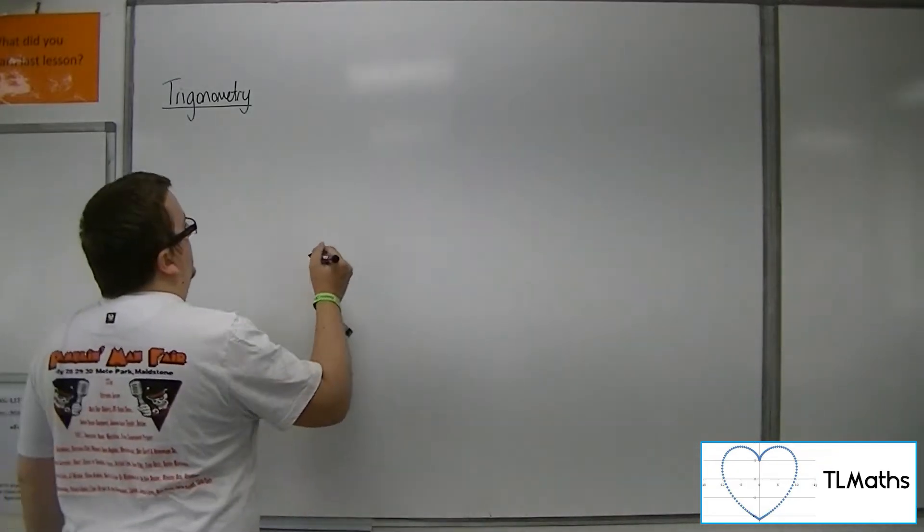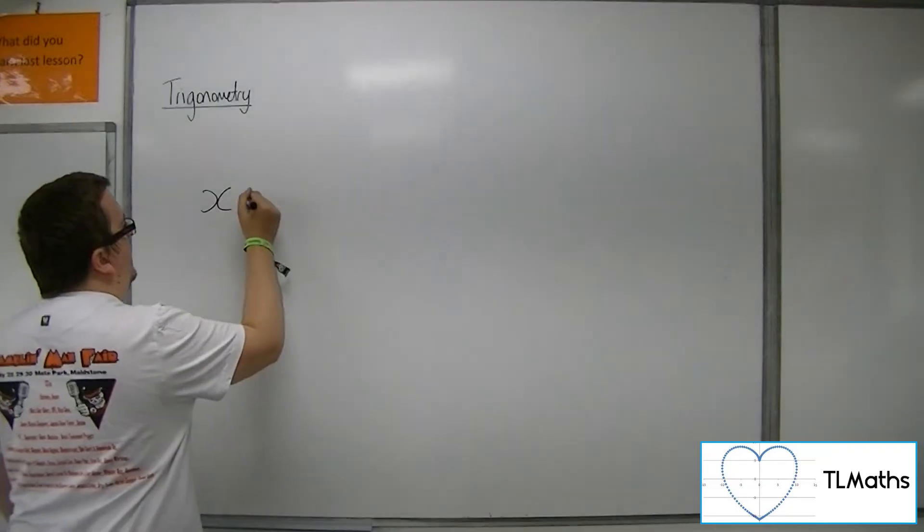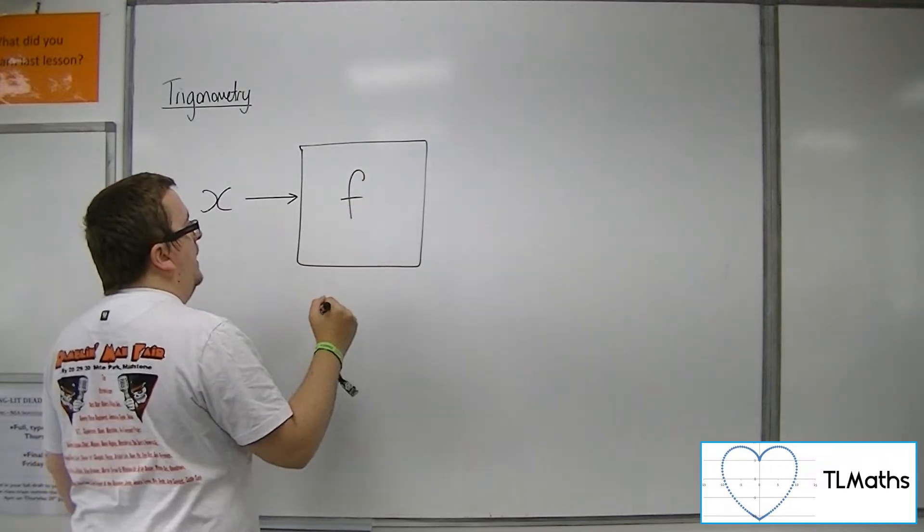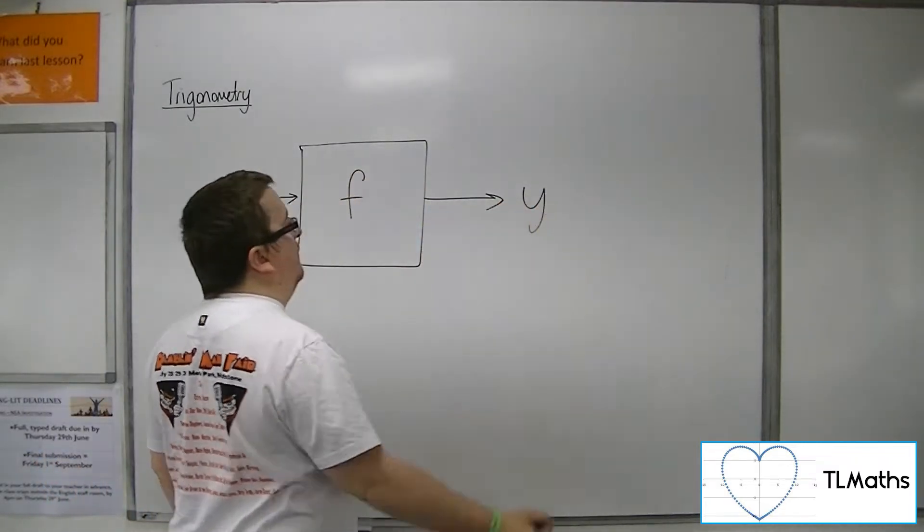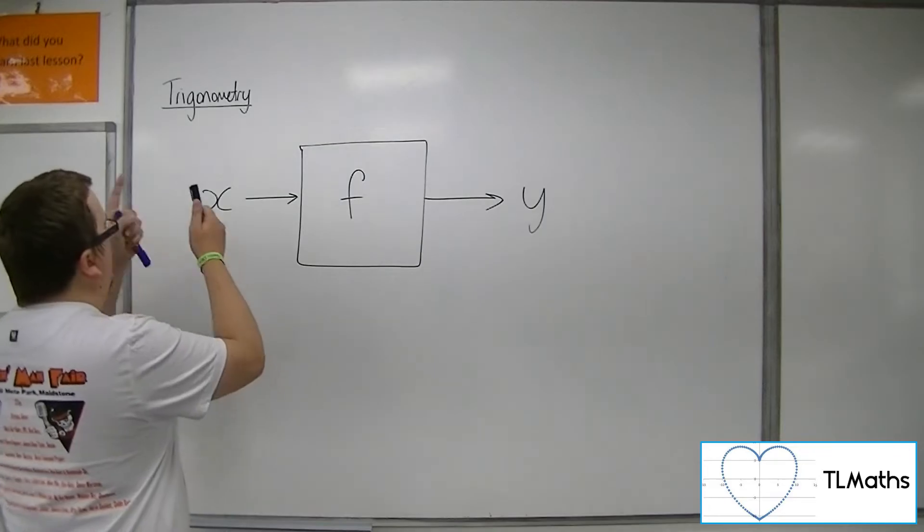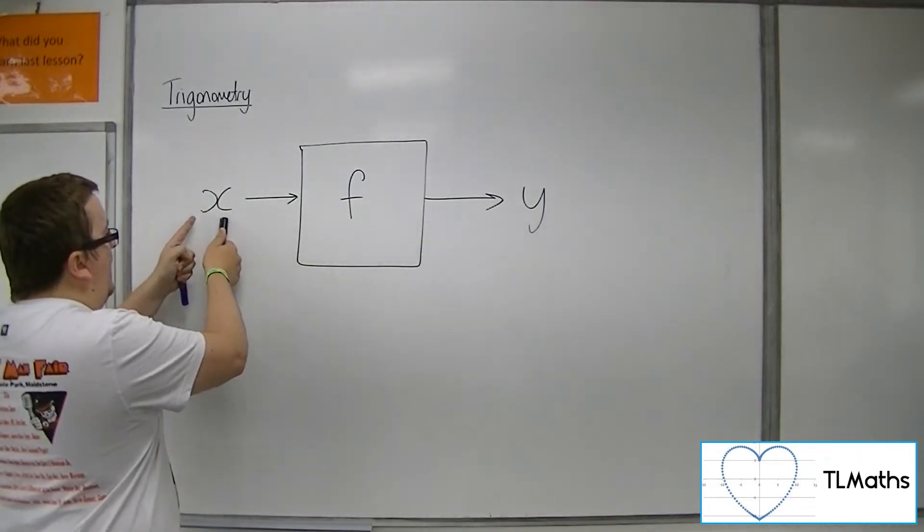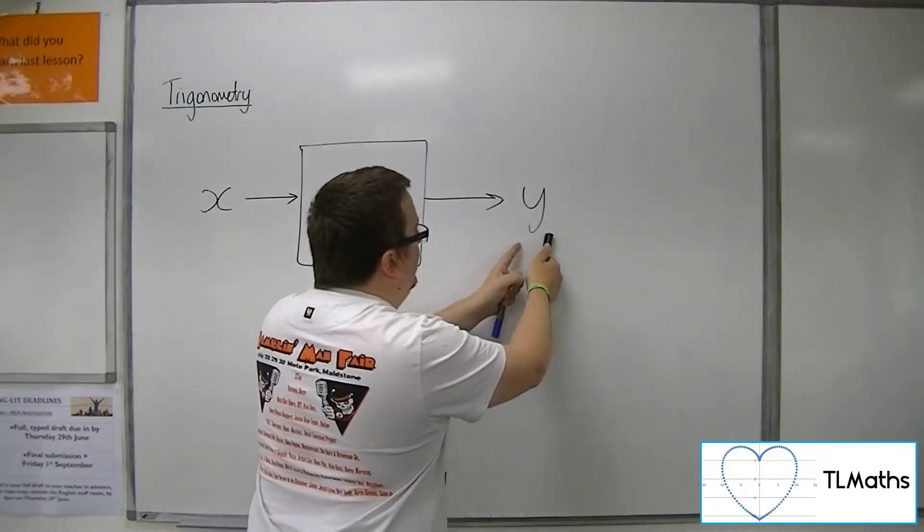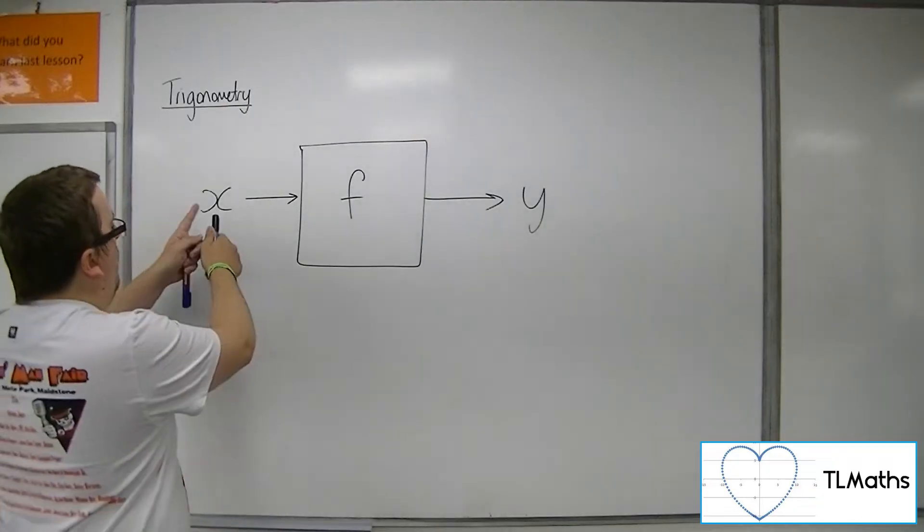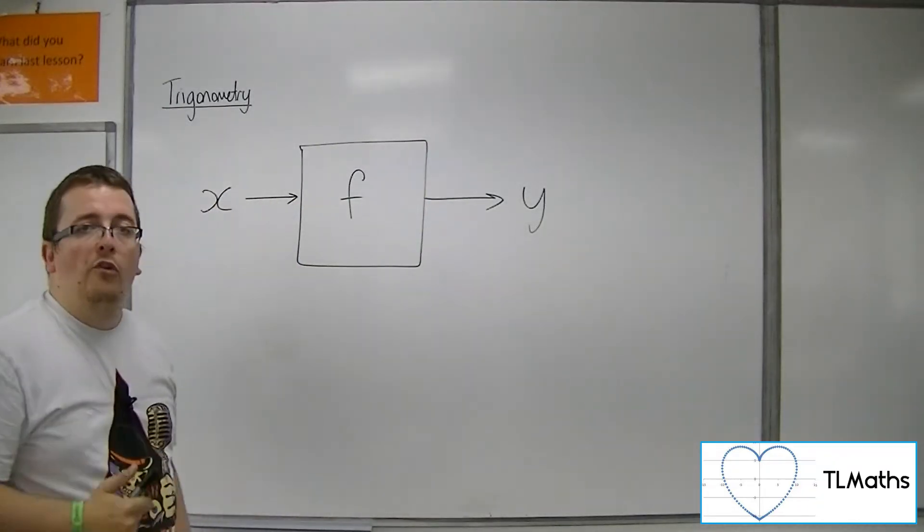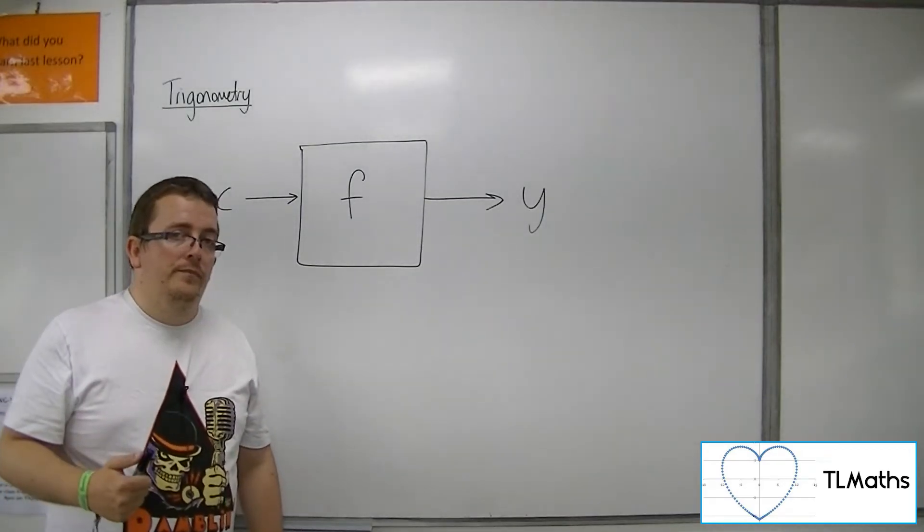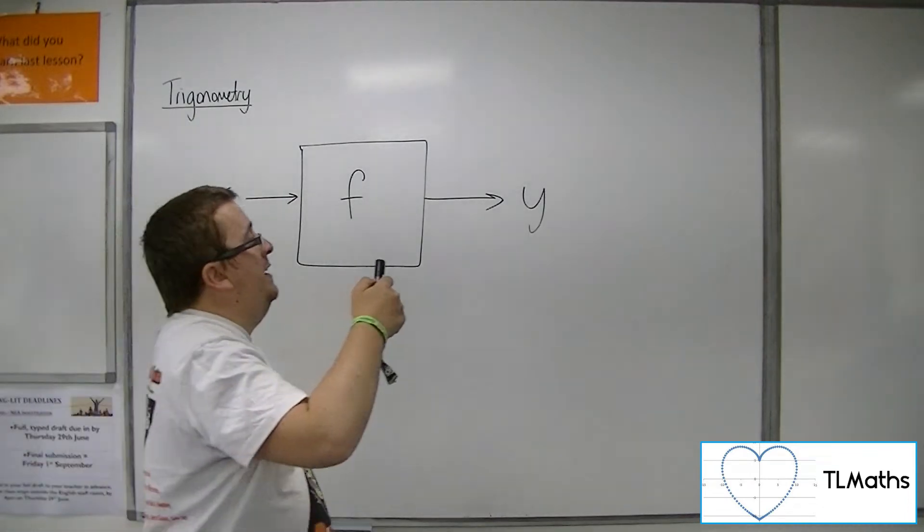Let's say we've got this value of x and we're putting it into this function machine and what we get out is a value of y. The fact that if I put in one value and get out one value, this is what constitutes a function. I don't put in one x and get out two or more values of y. If that's the case, this is not a function. One input creates one output.